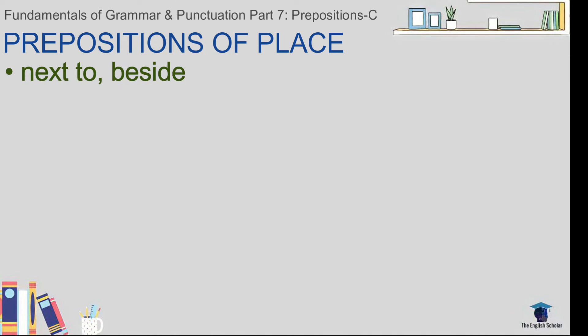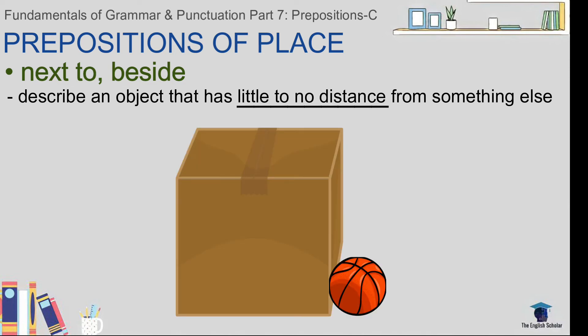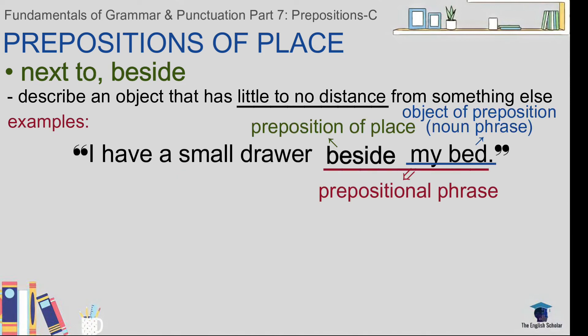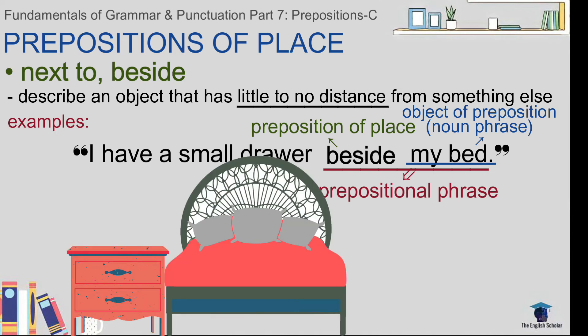Next: 'next to' and 'beside.' These prepositions describe an object that has little to no distance from something else. For example: 'I have a small drawer beside / next to my bed' — meaning the drawer is very close to my bed, just next to it. There is little to no distance at all.